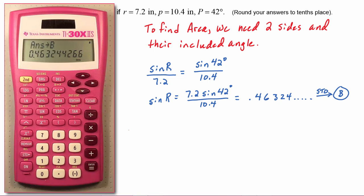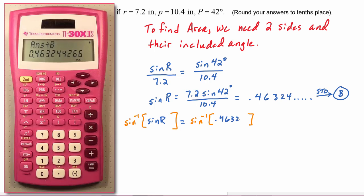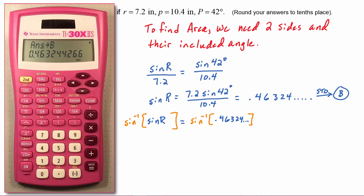Now we know that to get at angle R we are going to have to take the sine inverse of both sides. So we will take the sine inverse of the sine of R and that's going to equal taking the sine inverse of that number we just stored in B, which is the 0.46324 et cetera.